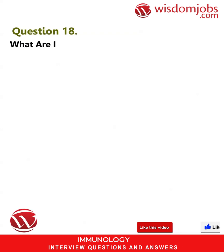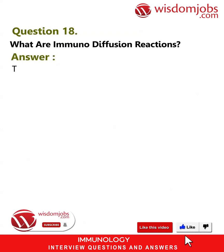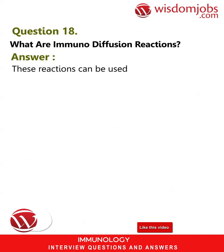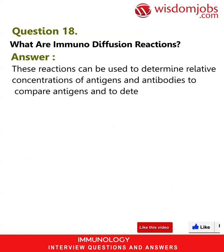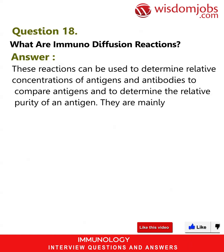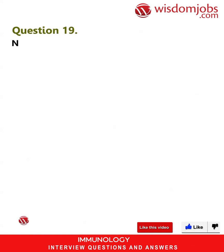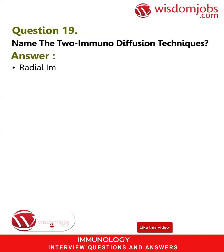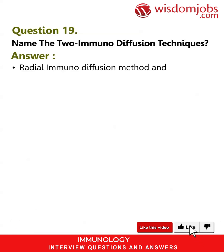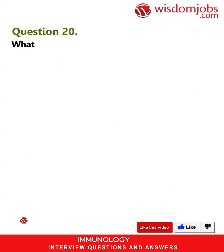Question 18: What are immunodiffusion reactions? Answer: These reactions can be used to determine relative concentrations of antigens and antibodies, to compare antigens, and to determine the relative purity of an antigen. They are mainly performed in 1% agarose gels. Question 19: Name the two immunodiffusion techniques. Answer: Radial immunodiffusion method and double immunodiffusion in two dimensions.